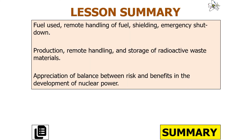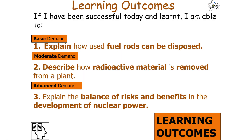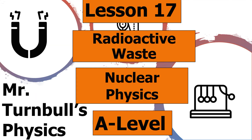To summarise today's lesson, we should understand the fuel used, the remote handling of fuel, shielding, and emergency shutdown procedures; understand the production, remote handling, and storage of radioactive waste materials; and appreciate the balance between risks and benefits in the development of nuclear power. We should be able to explain how fuel rods are disposed of, describe how radioactive material is removed from a reactor, and explain the risk-benefit balance. Thank you very much for watching and have a lovely day.